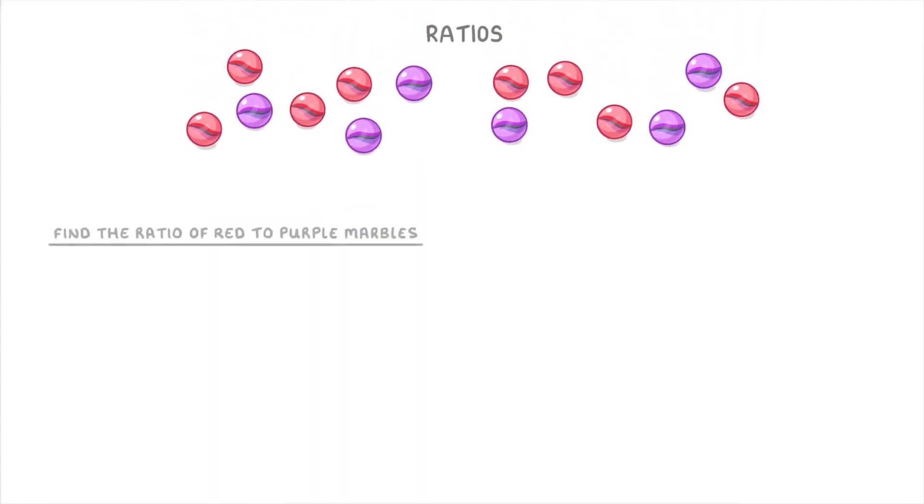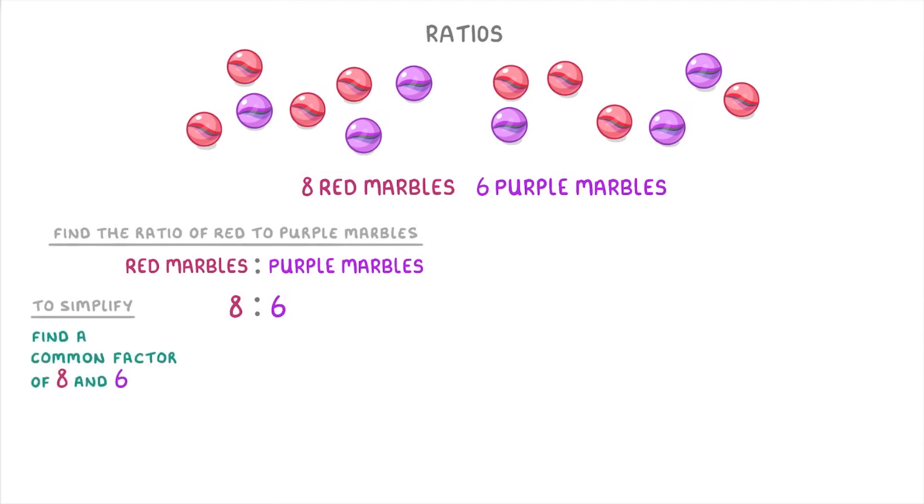As a second example, let's look at this group and try to find the ratio of red to purple marbles. So here you can see that we have eight red marbles and six purple marbles. So our ratio of red marbles to purple marbles would be 8 to 6. And if you wanted to simplify this, which is what you would normally have to do in an exam, you would need to find a common factor of both 8 and 6 that you could divide them both by, which would be 2. So you'd divide both 8 and 6 by 2, so that the ratio becomes 4 to 3.